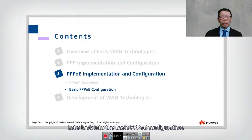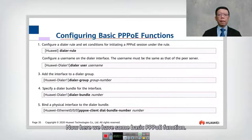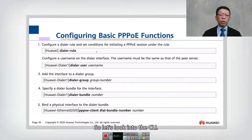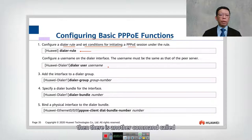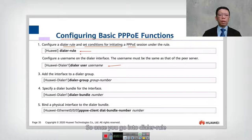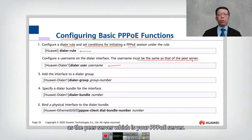Let's look into the basic PPPoE configuration. To configure dial rules and set the condition for initiating a PPPoE session, we use a command called dial rules. There is another command called dial user followed by the username. Once you go into dial rules — assuming this is one — we have dial one. Inside dial one you are going to specify the username, and this username must be the same as the peer server, which is your PPPoE server.